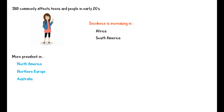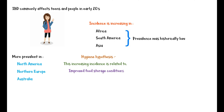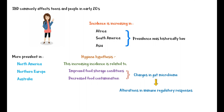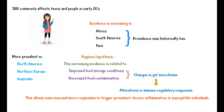Inflammatory bowel disease commonly affects teens and people in their early twenties. The geographic distribution of IBD is highly variable, but it is more common in developed nations such as North America, Northern Europe, and Australia. However, the incidence of IBD is increasing in regions like Africa, South America, and Asia, where its prevalence was historically low. The hygiene hypothesis suggests that this increase is related to improved food storage conditions and decreased food contamination, which causes changes in gut microflora, eventually leading to alterations in immune regulatory responses in the gut, allowing mucosal microorganisms to trigger persistent chronic inflammation in genetically susceptible individuals.